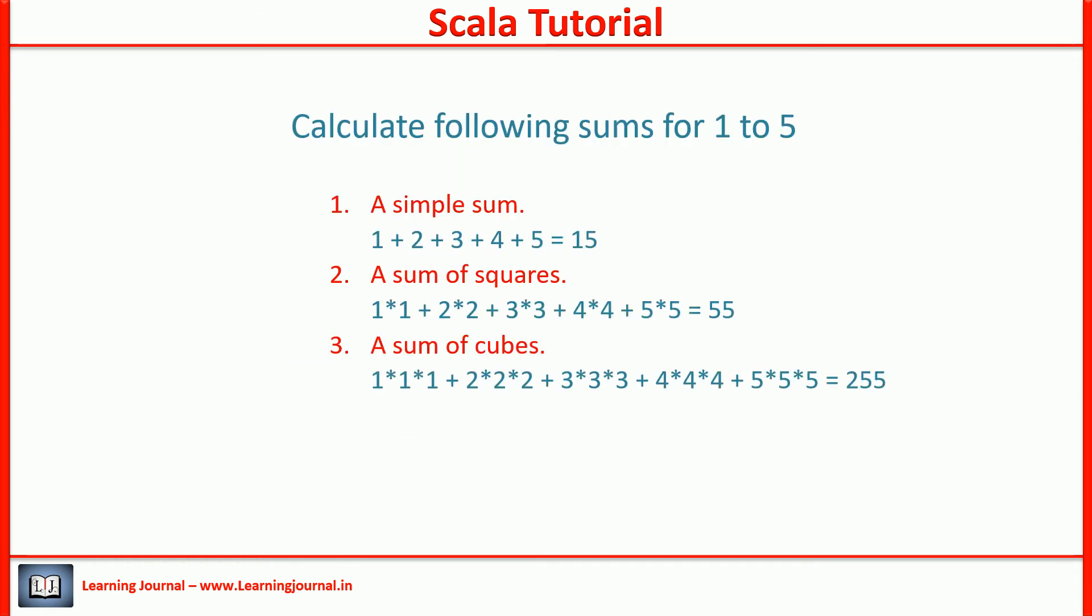I have got a requirement to calculate different types of sums for a given bound. Let's assume the lower bound is 1 and the upper bound is 5. And the requirement is to calculate three types of sums: a simple sum like this, a sum of squares like this, and the sum of cubes like this. Do you want to create three different functions for these three requirements? I don't want to do that. Because I am expecting to get some more similar requirements.